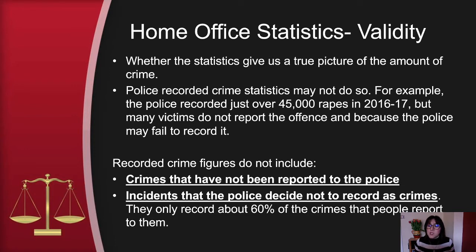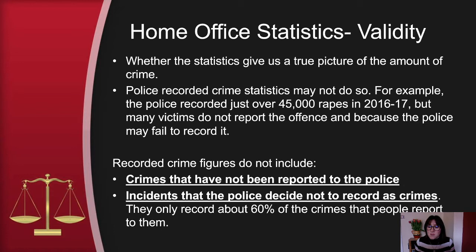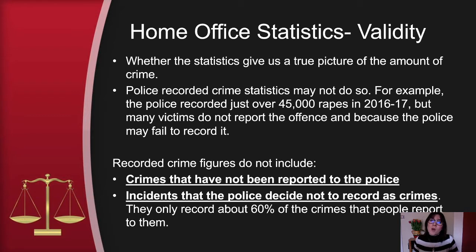We've looked throughout unit 1 at the idea that police do not always record crimes that get reported to them — they may only record about 60% of the crimes that people report. That means 40% of reported crimes are not recorded. How can a police officer make a judgment about whether a crime should be recorded? And how can you then see patterns if these things are not made a record of?